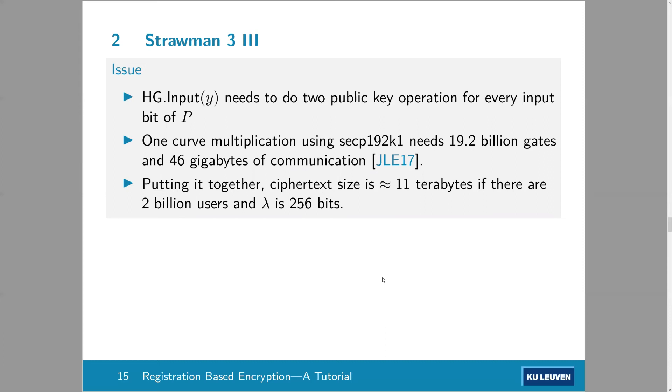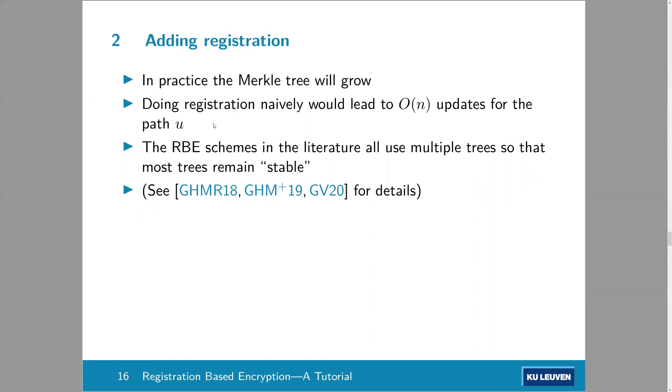Now, so that's solved the, so now we have a scheme which doesn't need IO and there's no interaction. But the issue here is we need to garble this HG input and HG input actually needs two public key operations for every input of program P. And if you do the calculation, the ciphertext will become huge. It's 11 terabytes if there are two billion users. And actually, if you have fewer users, it doesn't feel much better because the ciphertext size is logarithmic in the number of users.